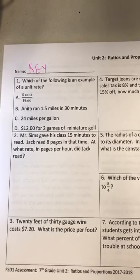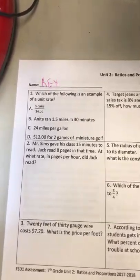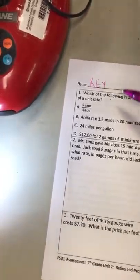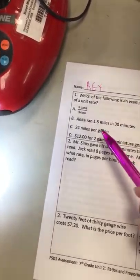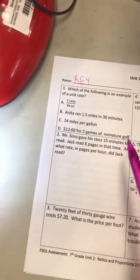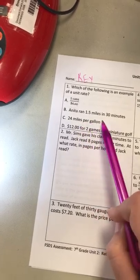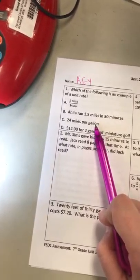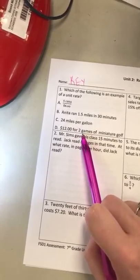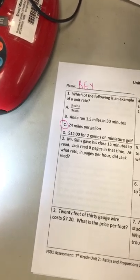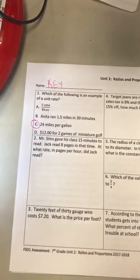Number one says which of the following is an example of a unit rate. Remember that a unit rate is some value over one. Five cans for four dollars is not a unit rate because it does not have a denominator of one. Option B, Anita ran one and a half miles in 30 minutes — that doesn't give a denominator of one. Option C, 24 miles per gallon, means 24 miles per one gallon — that is a denominator of one. Option D, $12 for two games of miniature golf, does not have a denominator of one. So our correct answer is C.